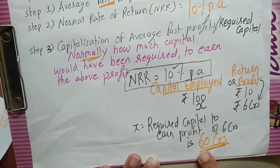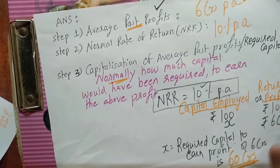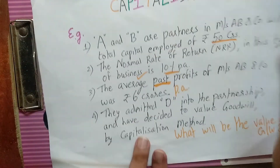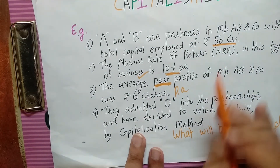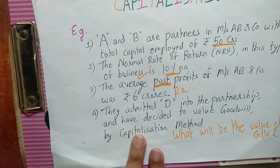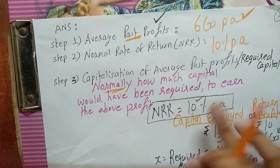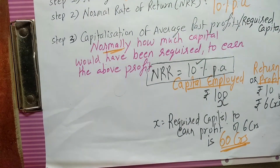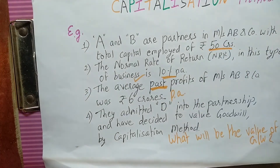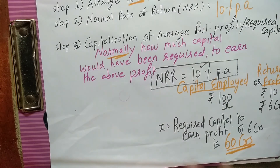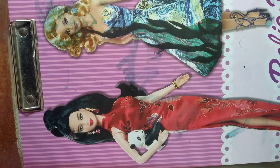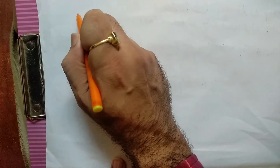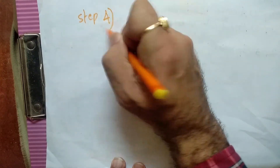Capital employed should have been 60 crores. Lekin mere doston, ye log to kam capital laga rahe hai — 60 crore nahi lagaya, ye log ne to khali capital 50 crores ka hi lagaya. Kam capital laga ke profit kama liya. Messrs AB and Company — they are earning on an average 6 crores; for earning 6 crores, according to the normal trend, they should have employed 60 crores. But kam capital laga ke wo log kama rahe hai — why? Ho sakta hai unka dukan chhota hai, lekin phir bhi wo log profit kama rahe hai.